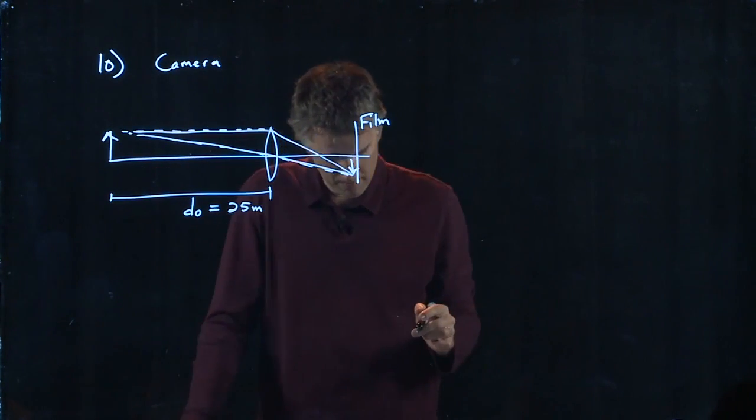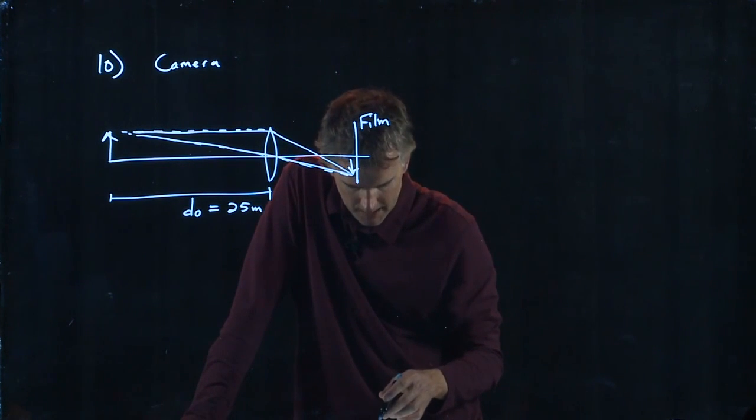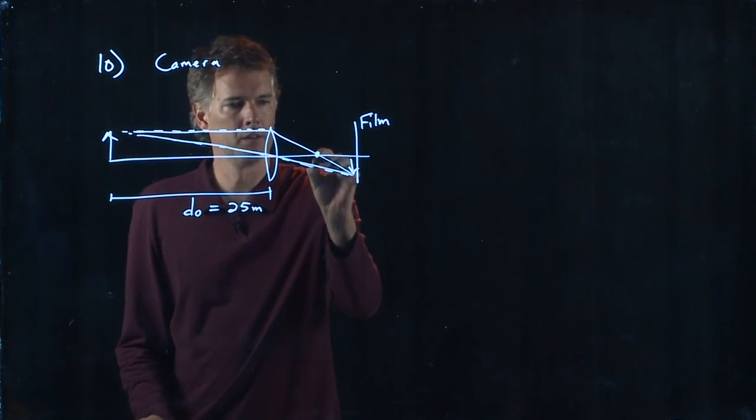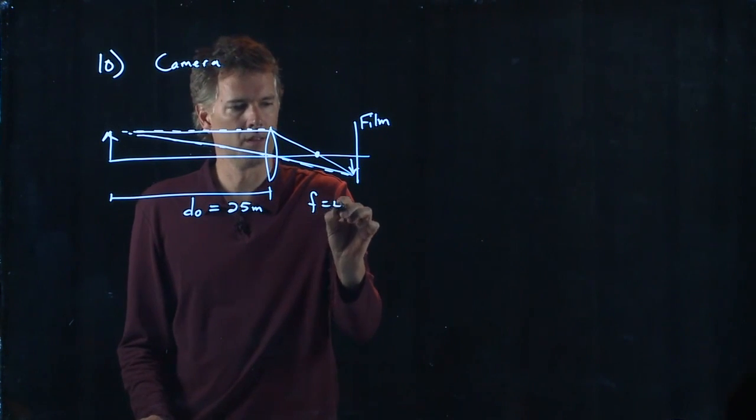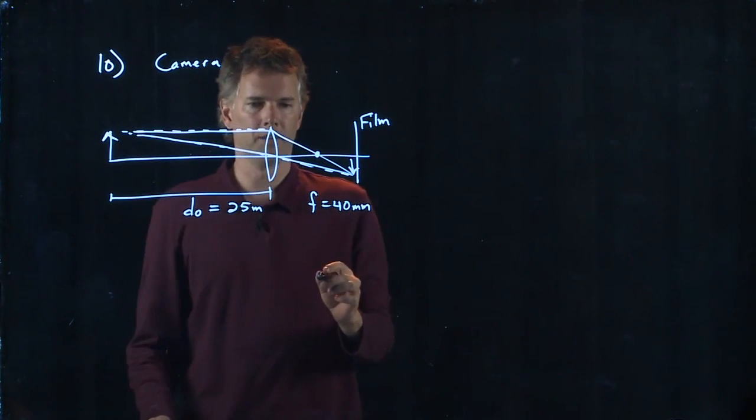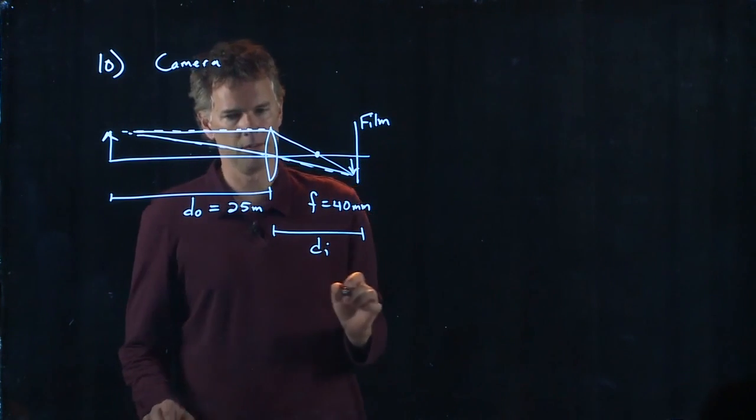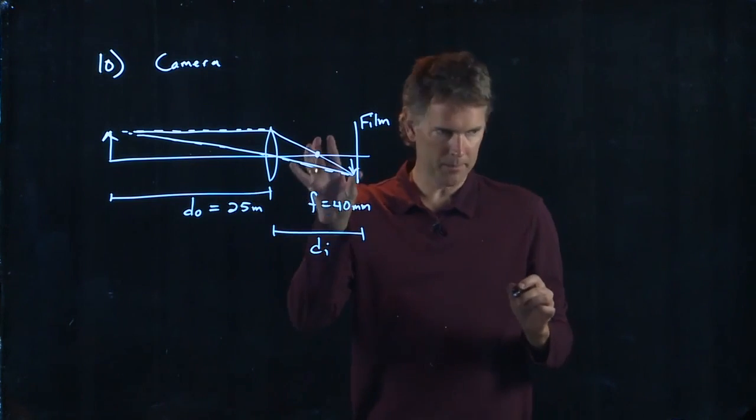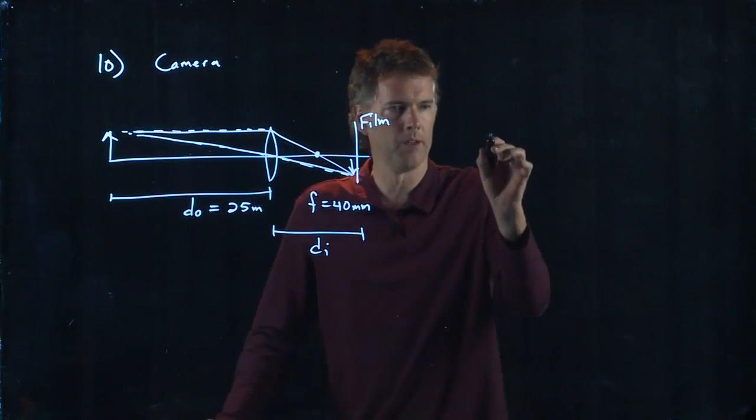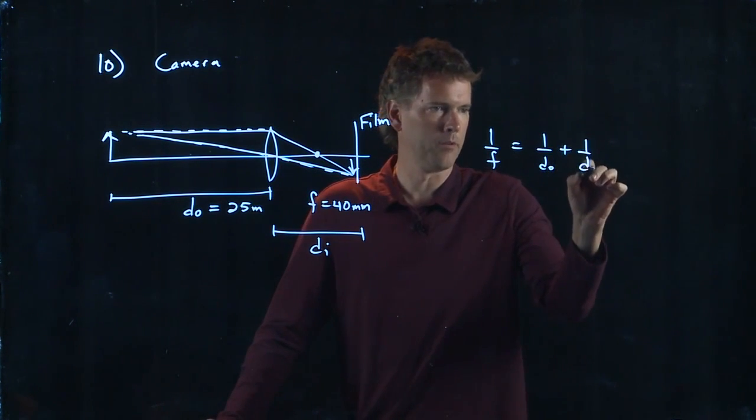They tell us that the focal length of the lens in the camera is 40 millimeters. This distance here is the image distance. So with those two numbers we should be able to figure out the image distance in this first case. Why don't we do that? 1 over F equals 1 over DO plus 1 over DI.